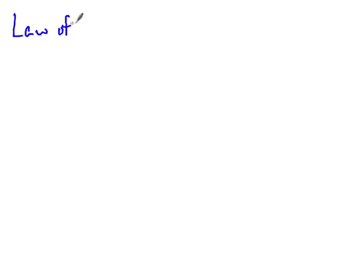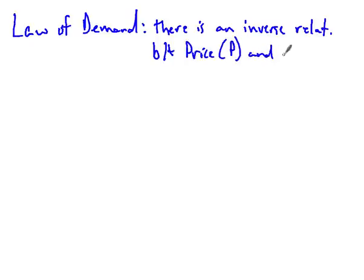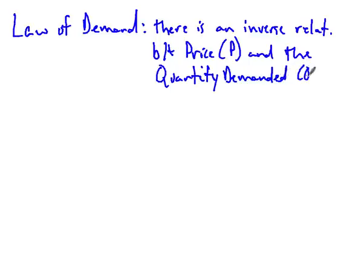The first thing we're going to look at is what's called the law of demand. Let's get a definition down for it. We'll do a textbook definition, then look at it more plainly. The law of demand simply says that there is an inverse relationship between the price of a product and the quantity demanded — QD — of a product.